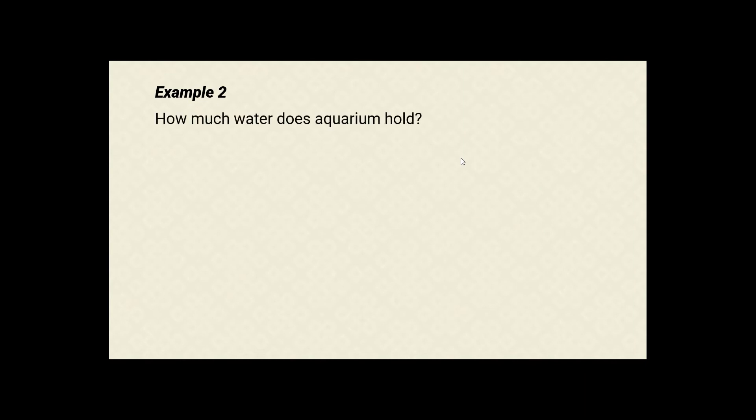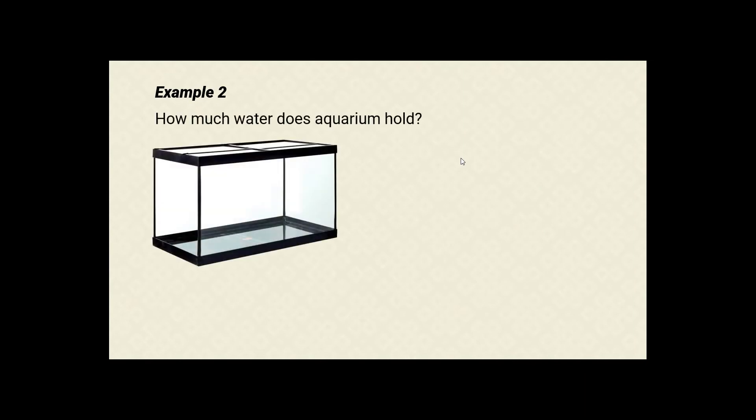Let us look at another example. How much water does this aquarium hold? The dimensions are: length is 3 meters, width is 1 meter, and height is 2 meters.